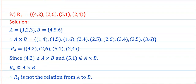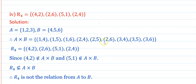R4 = {(4,2),(2,6),(5,1),(2,4)}: checking against A cross B — (4,2) is not in A cross B and (5,1) is not in A cross B. Since these elements do not belong to A cross B, R4 is not a subset of A cross B. Therefore R4 is not a relation from A to B.